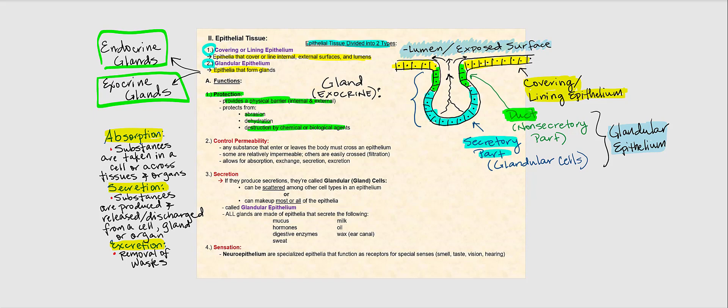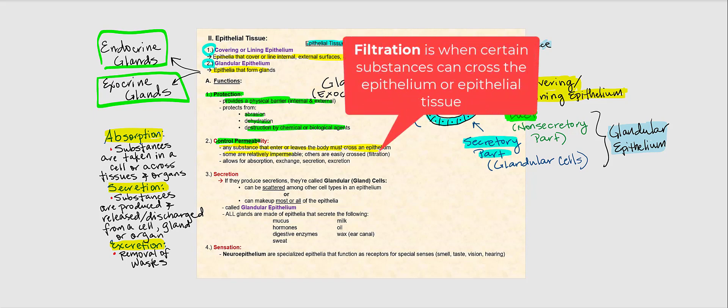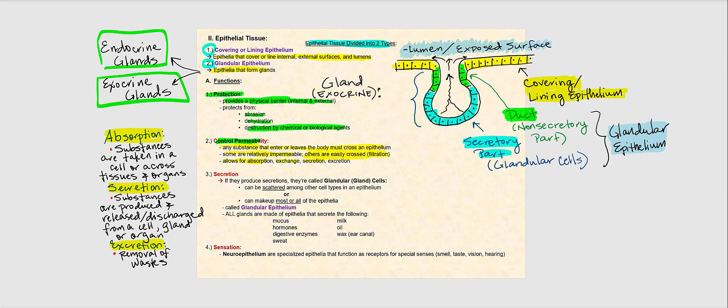Epithelial tissue also controls permeability. Any substance that enters or leaves the body must cross epithelial tissue. Some epithelial tissue is relatively impermeable, meaning nothing can cross, while some are easily crossed. It also allows for absorption, exchange, secretion, and excretion.